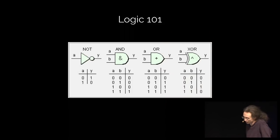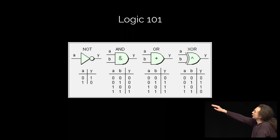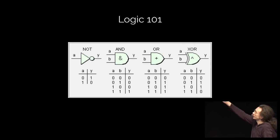But what is logic? Before I tell you how an FPGA works, we have to get down to logic 101. We have four operators: we have a NOT gate, we have the AND gate, we have the OR gate, and the exclusive OR gate. On the bottom, you can see the truth tables. When we have at the input, for example at the OR gate, 0 and 0, we get 0 on the output. When we have 0 and 1, we get 1, and so forth.